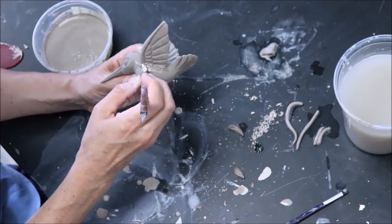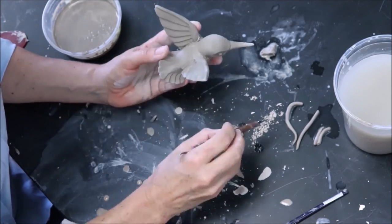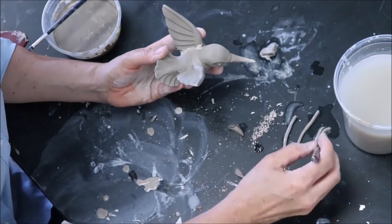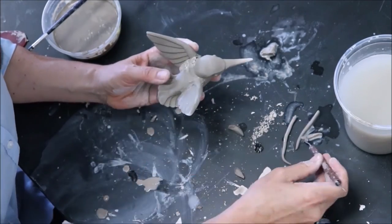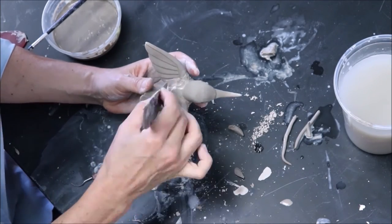The other very important reason we deflocculate the casting slip is to render all the magnetically charged clay particles with the same magnetic charge. Just like magnets that have the same charge, the clay particles, once deflocculated, will now repel one another.